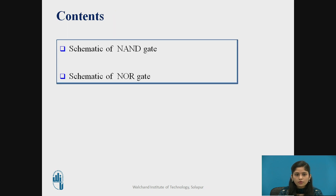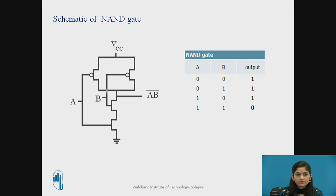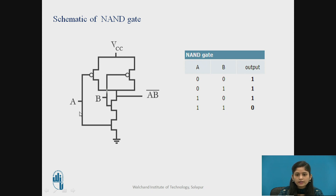The content covers the design of schematic of NAND gate and design of schematic of NOR gate. For the NAND gate using CMOS, two PMOS are connected in parallel condition and two NMOS are connected in series condition. Two inputs, input A and input B, are provided and the output taken across this terminal is A dot B whole bar.